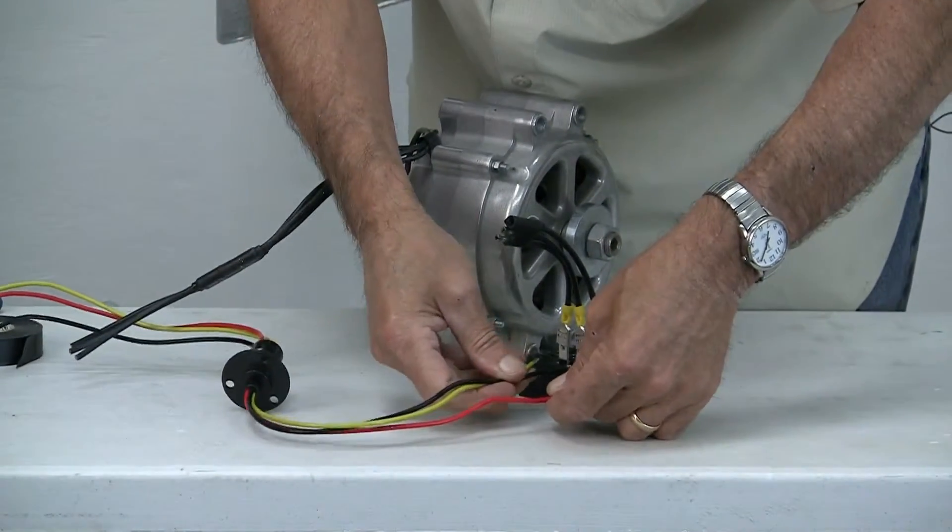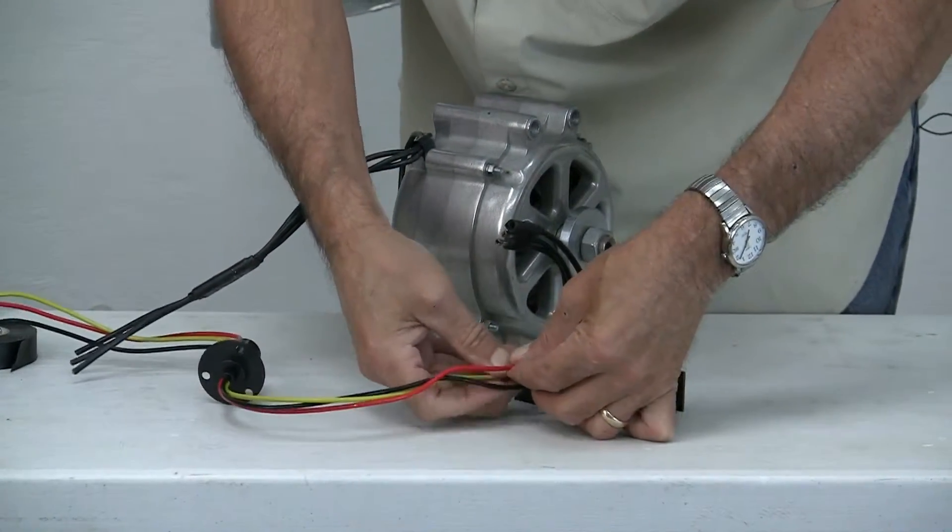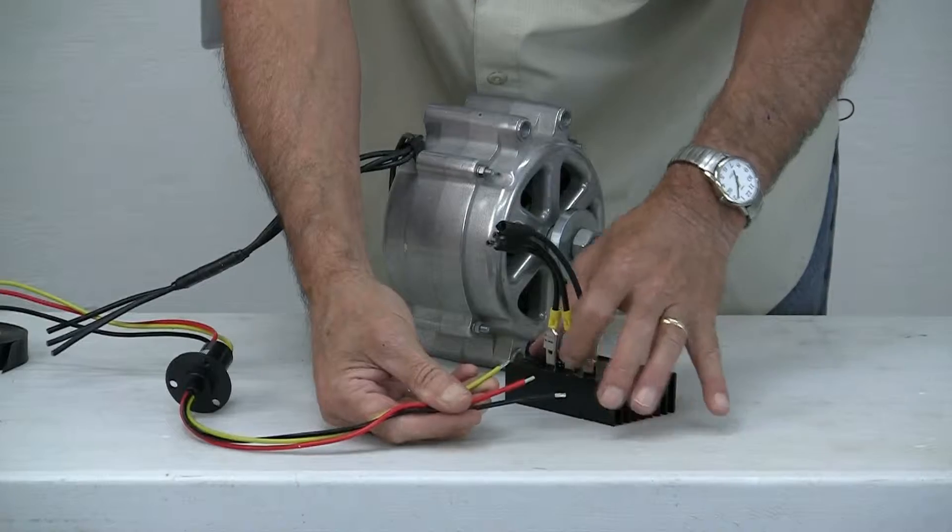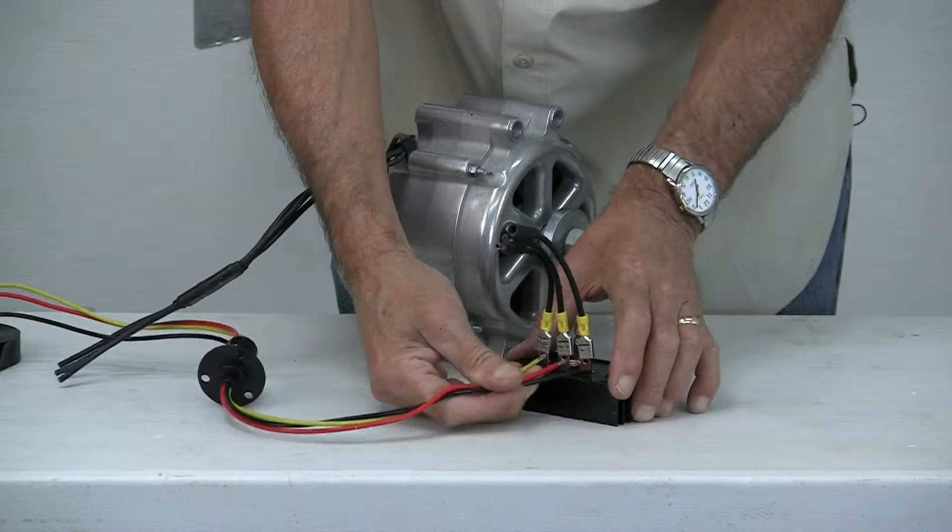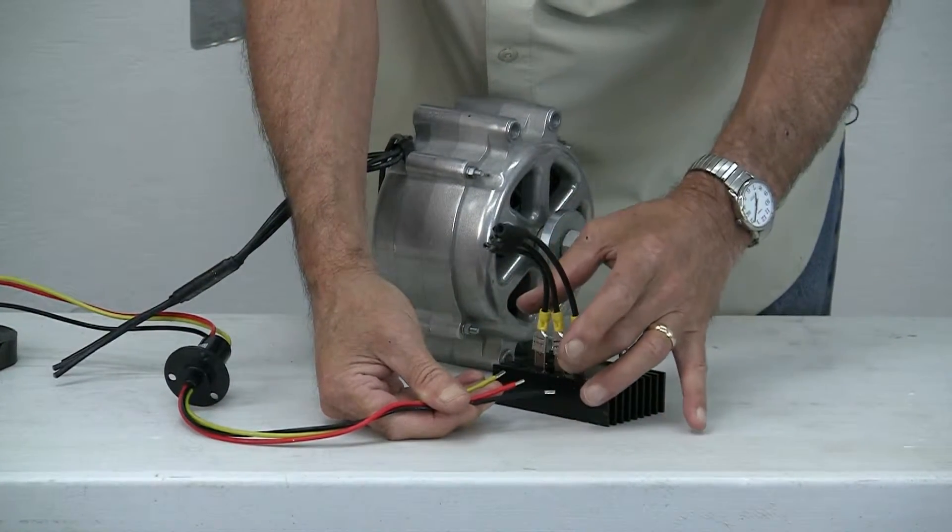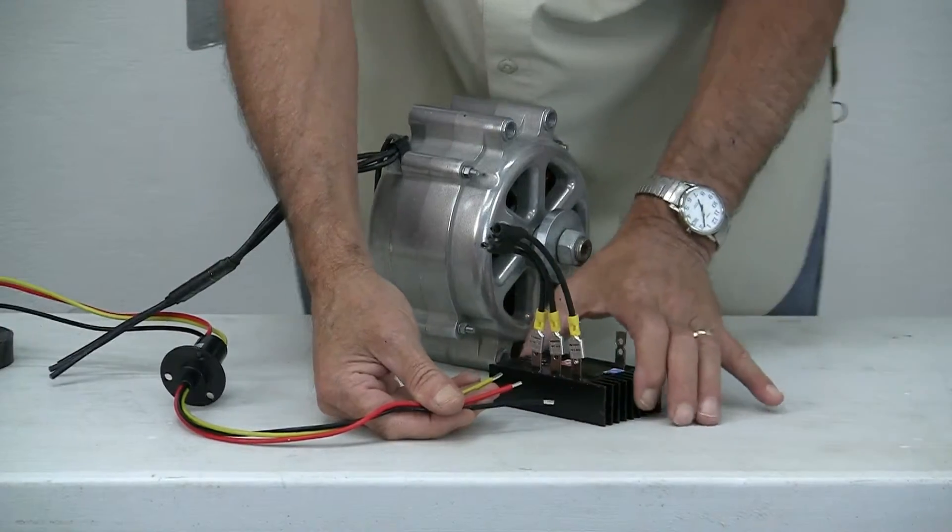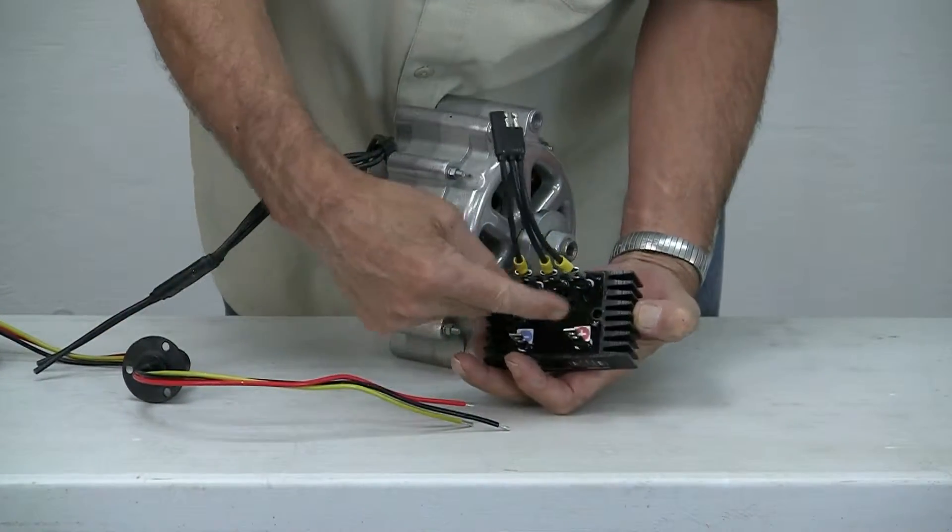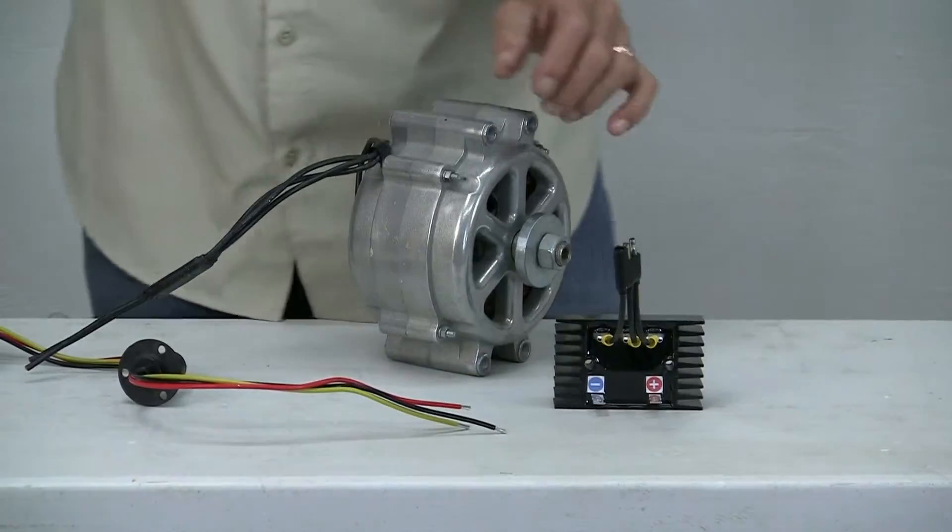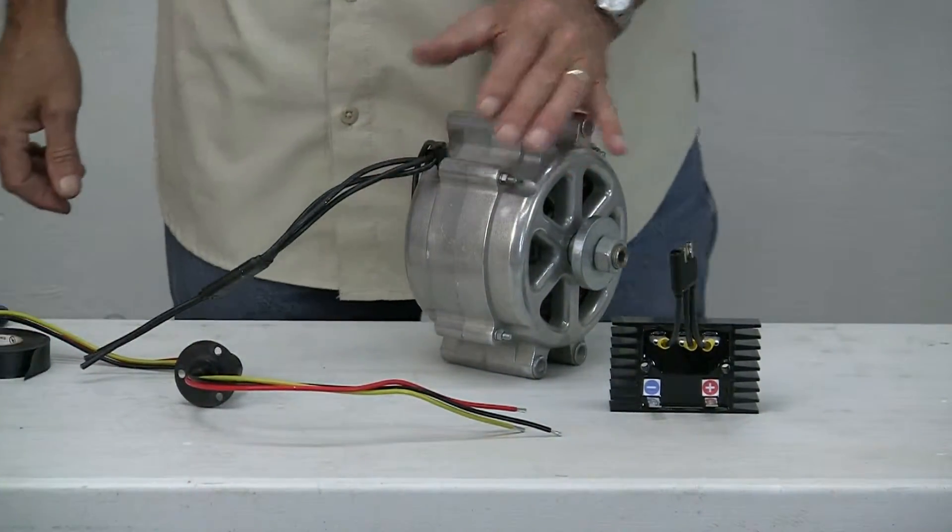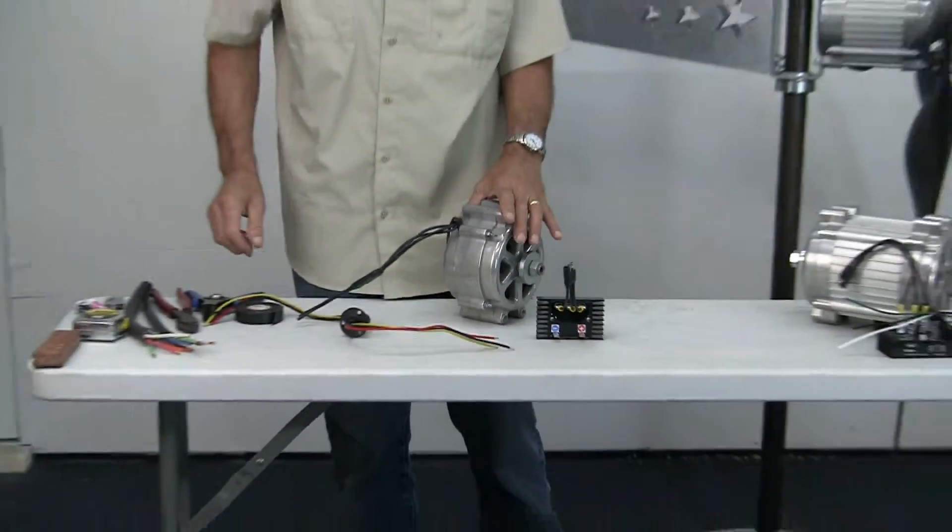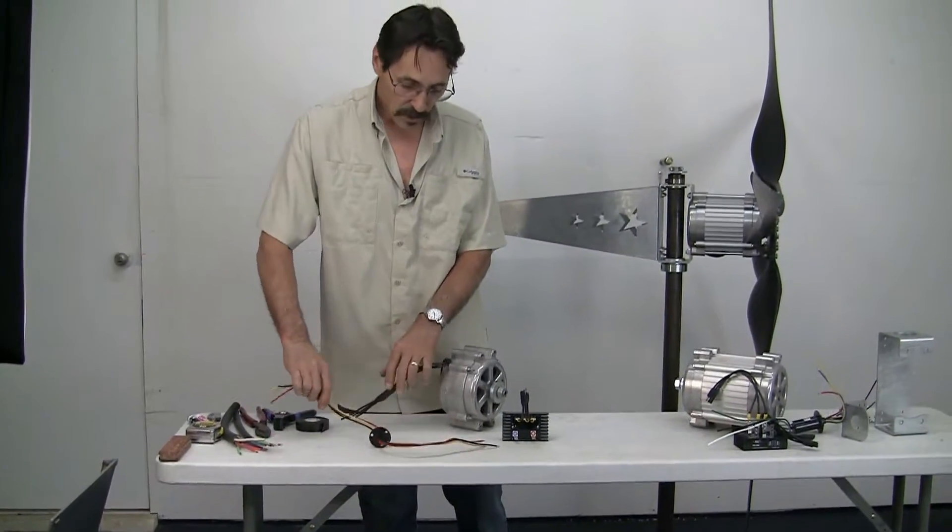It can be red, black, yellow, or black, red, yellow. It doesn't matter on which of these three terminals these go to. There is no positive, there is no negative on the three-phase side, just on the DC output side. So that's how you wire up a slip ring to our Freedom PMGs.